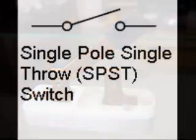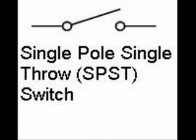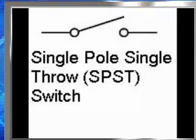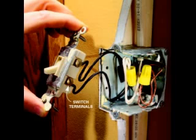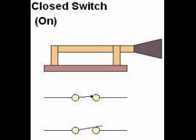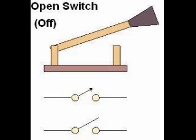This is a symbol for a single pole, single throw, or SPST switch. Here is another way this symbol might be drawn. The final output of any switch, such as this wall switch, will be at least a pair of wire connection terminals that will be either connected together by the switch's internal contact mechanism — which is called closed — or the terminals may not be connected together, which is called open.